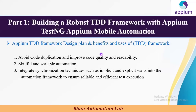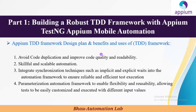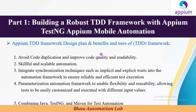The fourth benefit is parameterization — automating the framework to enable flexibility and reusability, allowing tests to be easily customized and executed with different sets of inputs. Parameterization is very important while developing an automation framework and even normal test scripts, because if done properly, one set of data can be reused multiple times in your scripts wherever that data is required.